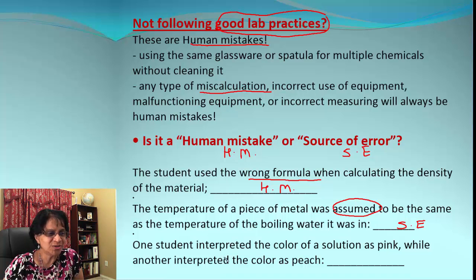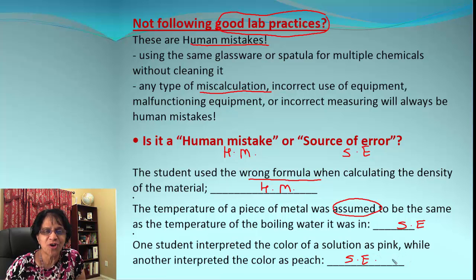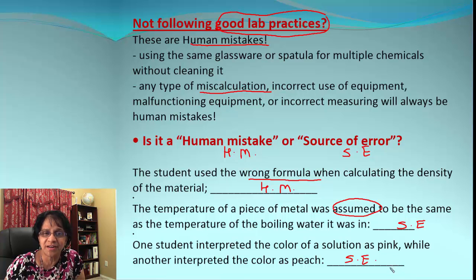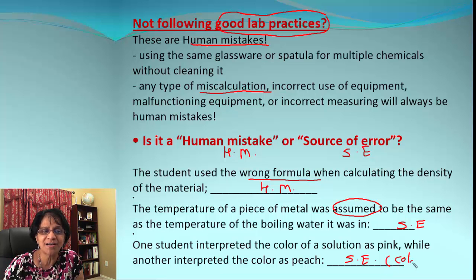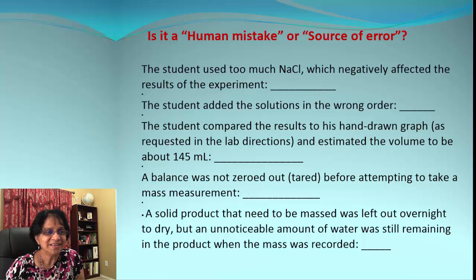Next: one student interpreted the color of a solution as pink, while another interpreted it as red. This is a source of error because the question is how do we draw the distinction between colors — sometimes pink and red may appear as slight variations. To get a consistent result, a color chart may help identify what color was obtained.